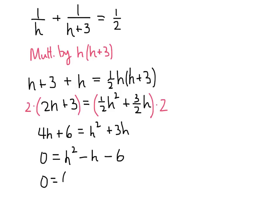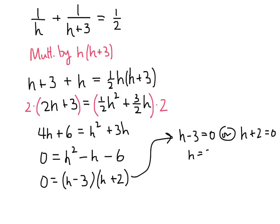We could use the quadratic formula here, but this factors pretty nicely. We're looking for two numbers that multiply to be negative six and add to be negative one, and the two numbers are minus three and plus two. So the solutions we get are h minus three equals zero, or h plus two equals zero. That means either h equals three or h equals negative two.